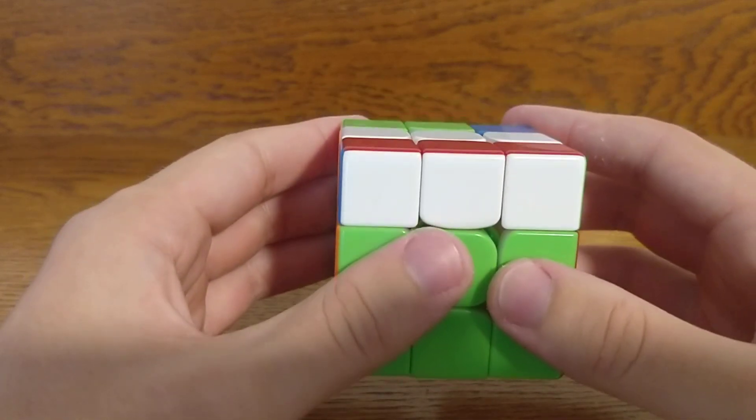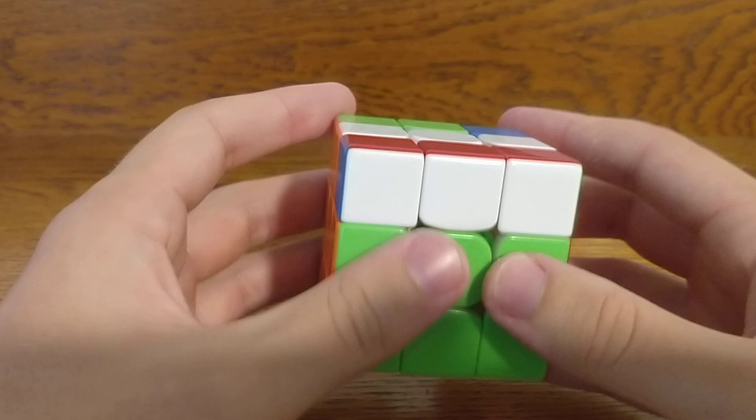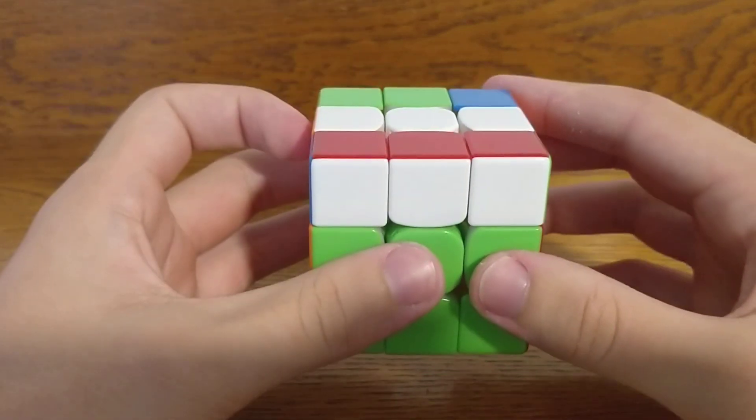A lot of people don't like this case, and I think that's because they use the wrong alg or the wrong finger trick. So right here is what I do. The alg will be in the description, but done slowly it looks like this.